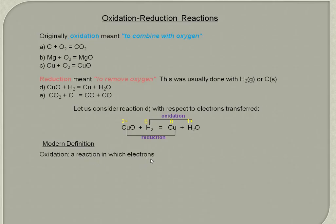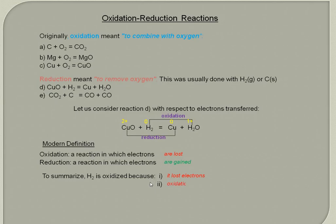So the modern definition to sum up: oxidation is a reaction in which electrons are lost. Reduction is a reaction in which electrons are gained. To summarize, hydrogen in this case is oxidized. We can give two reasons. First, because it lost electrons. And second, because its oxidation number increased. That's a convenient way of remembering it, looking at whether the oxidation number goes up—oxidation—or whether it goes down. Similarly, copper oxide is reduced because it gained electrons and the oxidation number decreased. So if the oxidation number goes down, we call that a reduction.